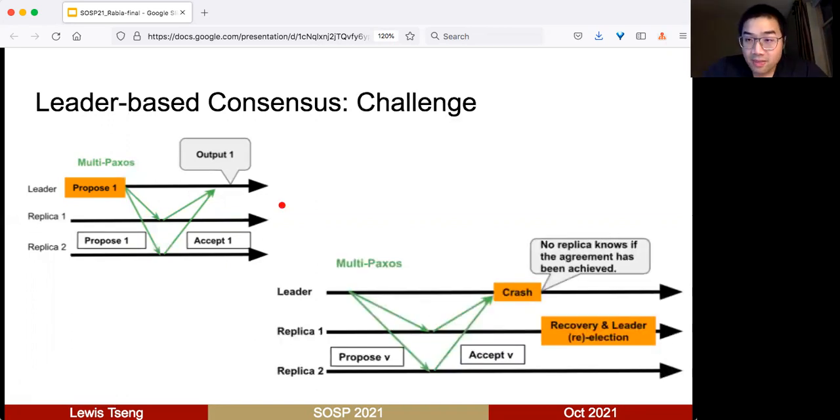But the complicated thing happens when the leader crashes. In this case, no replica actually knows what decision the leader made. The replicas between themselves need to do recovery and leader election to elect a new leader. But if during this process some replica again fails or the new leader fails, you need to redo the process again, which makes this side of failover and log compaction super complicated.